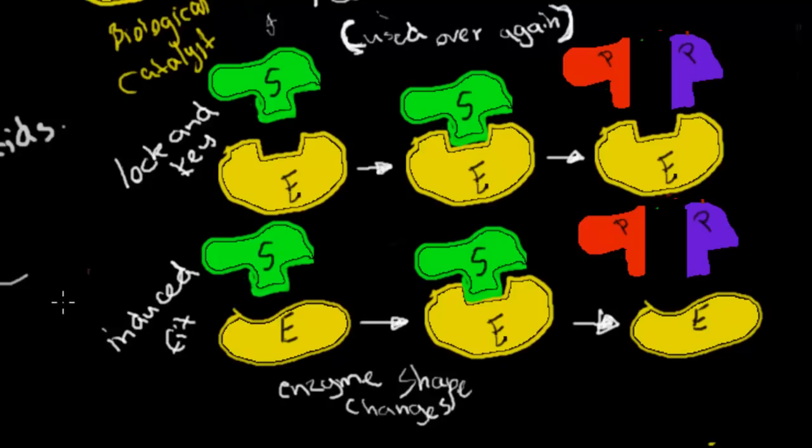I have two diagrams that show different models. The first diagram is the lock and key model. You see here that the substrate fits perfectly onto the enzyme. The model below is called the induced fit model. The substrate doesn't fit onto the enzyme perfectly but the substrate forces the enzyme to change shape. After the product is formed, the enzyme transforms back to its original shape.